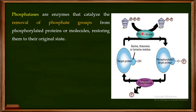Protein kinases add a phosphate group on specialized amino acids like serine, threonine, tyrosine, or histidine — I have a detailed video on that. When protein kinases phosphorylate the target protein, the phosphatases then act on these phosphorylated target proteins, removing the phosphate group and converting the target protein back to its original dephosphorylated state. This is how phosphatases maintain a balance of phosphorylation.